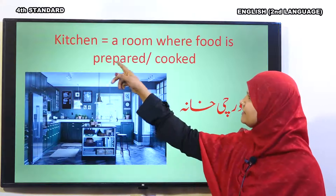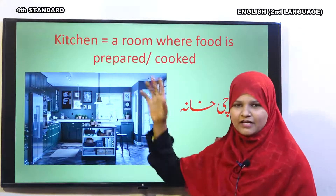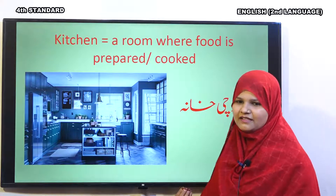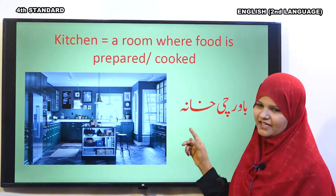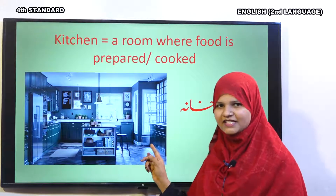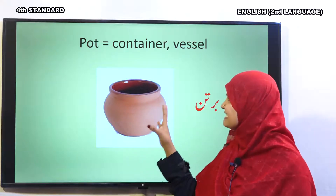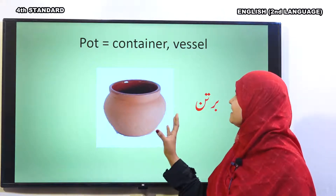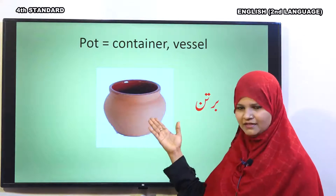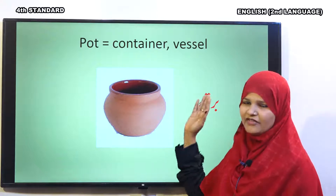Next, kitchen. A room where food is prepared. Aisa kamra jahaan par khana banaya jata hai, isse hum baawarchi khana kehenge. This is called kitchen. This is pot. Pot means a container or vessel, ek bartan. In English, we call it pot, or else container, or else vessel.